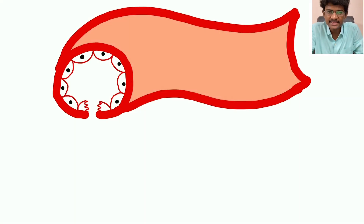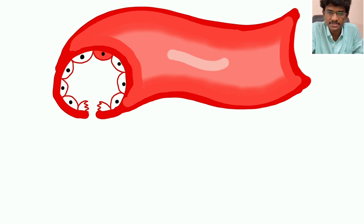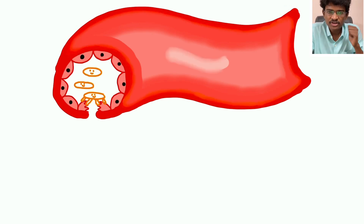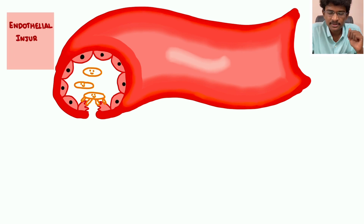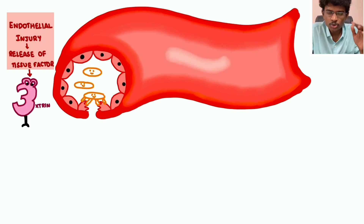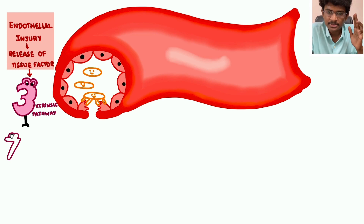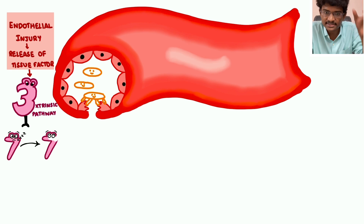Now let's see some basic as well as advanced concepts in the coagulation system that will help us understand anticoagulants better. Whenever any endothelial injury happens, platelets come first and form the primary plug. Damaged tissue releases tissue factor, which is factor 3. Factor 3 activates the sleeping factor 7 into active factor 7a — this is the extrinsic pathway.